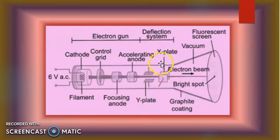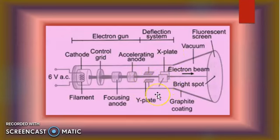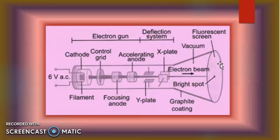The X plates are called the horizontal plates. The Y plates are the vertical plates. The vertical plates produce up-and-down deflection, and the horizontal plates produce left-and-right deflection. As a result, we get a fine beam that goes straight to the screen. The screen is coated with phosphorous salt. When the electron hits it, the electron de-excites and releases its energy, producing a light spot.